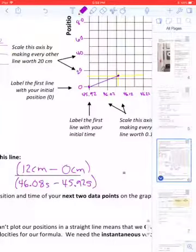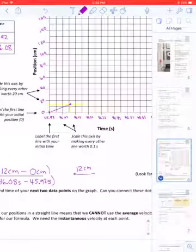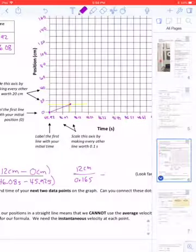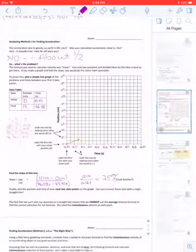And if I do that, I will come up with 12 centimeters divided by 0.16 seconds, which gives me 75 centimeters per second. And it asks if it looks familiar.